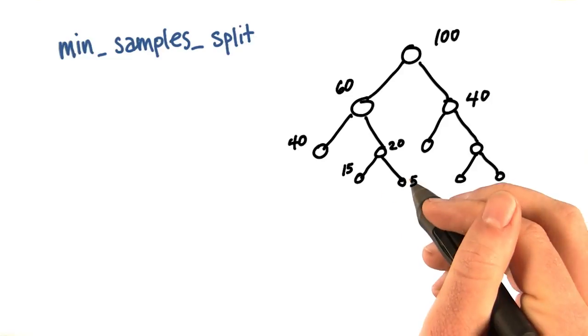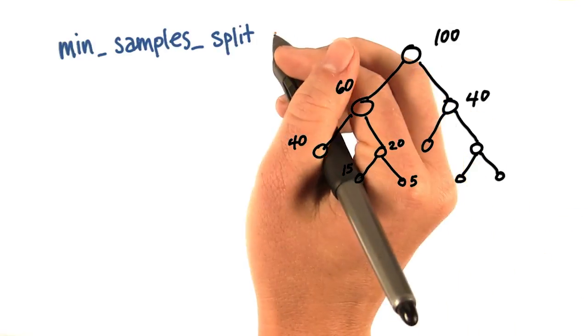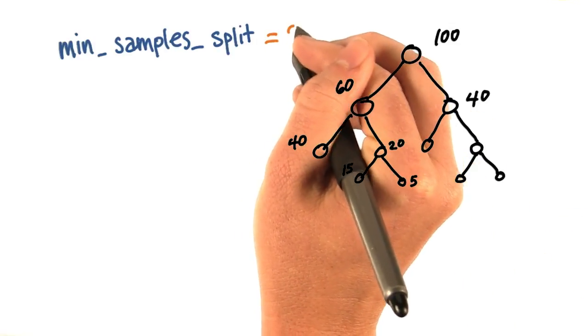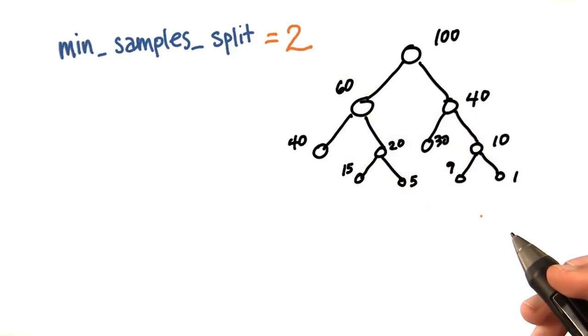So the default number for min_samples_split is 2. So all of these nodes I can further split, except for one of them.